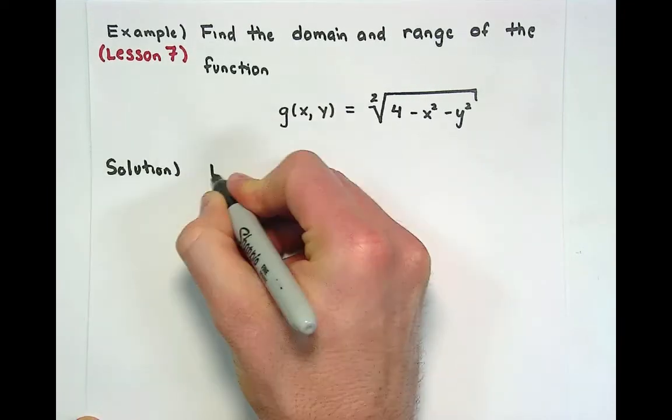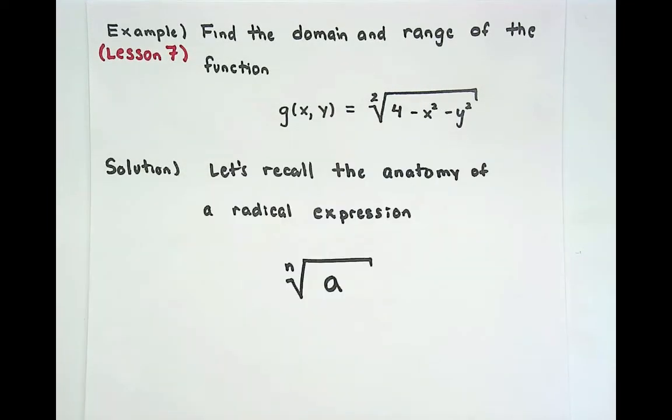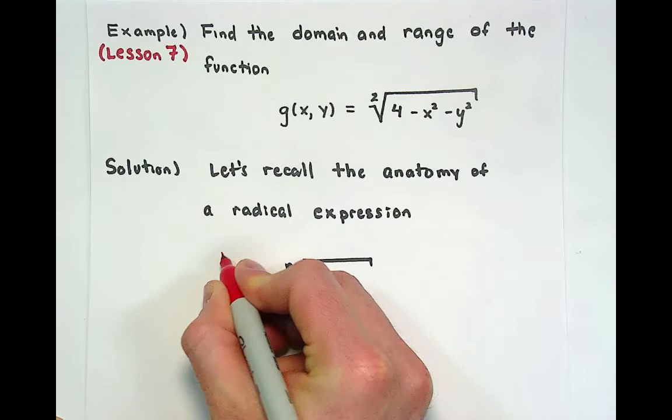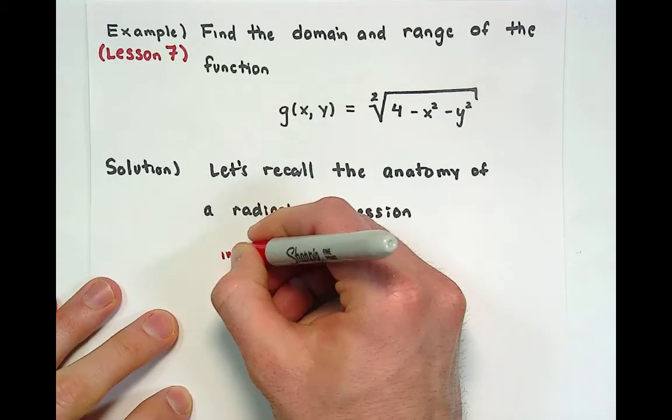To begin our solution, let's recall the anatomy of a radical expression. When we read this radical expression, the thing sitting up here on the little table stand is called the index of the radical.